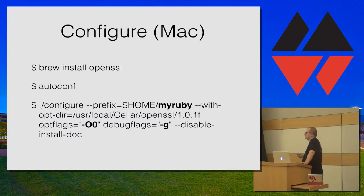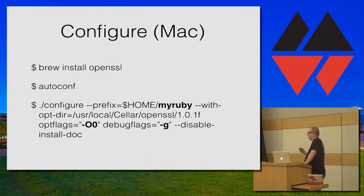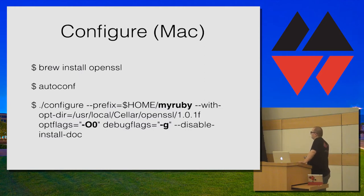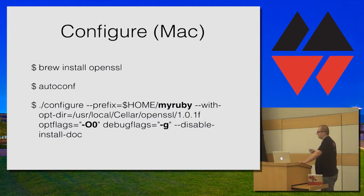The next step is to configure the source code, because it's designed to run on multiple platforms. So you have to configure it for the platform you are running on. In this case I have a Mac and also a Linux example. You have to install OpenSSL because it's required for Ruby gems. Then you run the autoconfig utility which will configure the source code for your hardware. You configure Ruby to install into my Ruby folder in your home folder with disable optimization. We disable optimization to make debugging easier, and we set the debug flag to make sure binaries include debug information so when you run in a debugger you get line numbers.